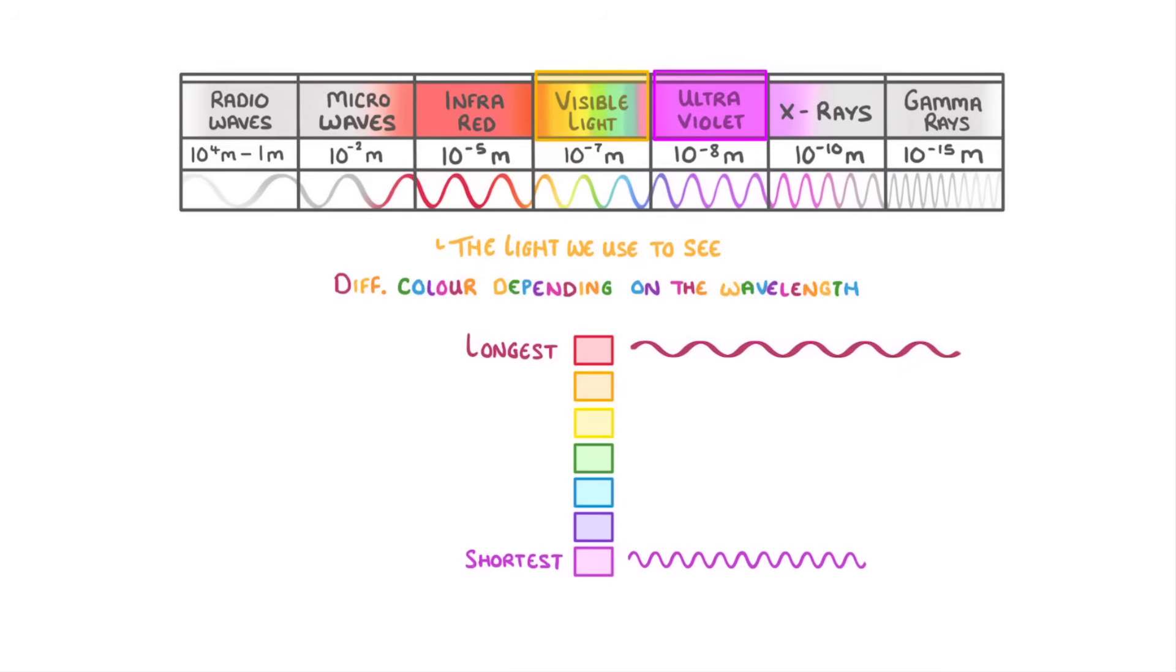You can remember the order of the colours using the phrase Roy G Biv, which stands for red, orange, yellow, green, blue, indigo, and violet.